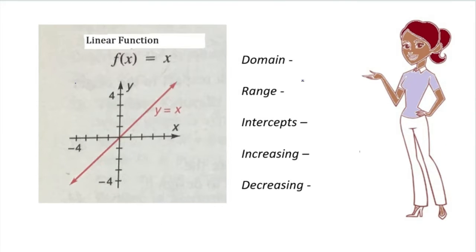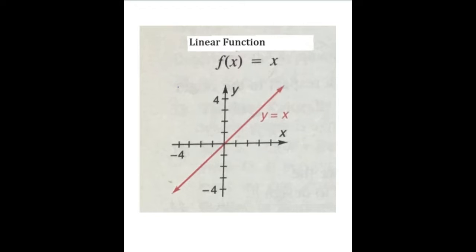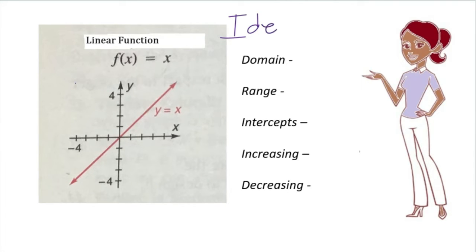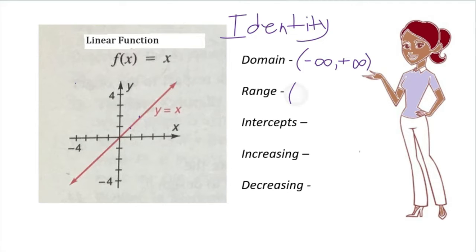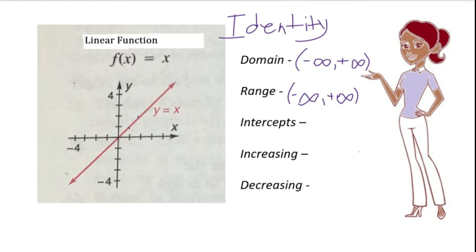Here is an example of the parent function for a linear function. A linear function can also be called an identity function because the x and y are equivalent. Looking for the domain, we go along the x-axis from the left side to the right side, and we can see it can be all real numbers, denoted as negative infinity to positive infinity.